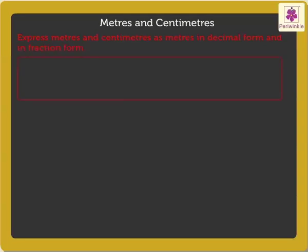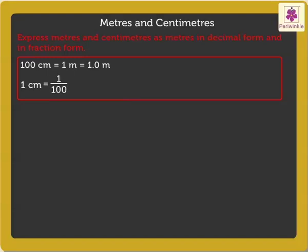We know that 100 centimeters is equal to 1 meter, which is expressed as 1.0 meter as a decimal. And 1 centimeter is expressed as 1 upon 100 meter as a fraction, which is equal to 0.01 meter in decimal form. It is one of the 100 equal parts of a meter.